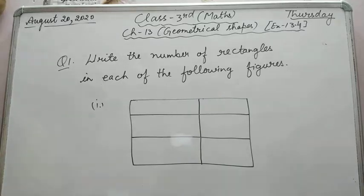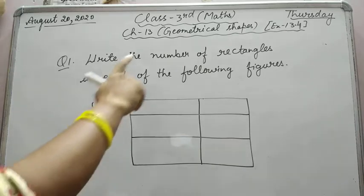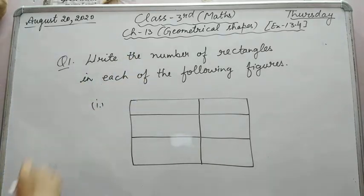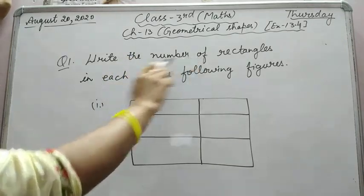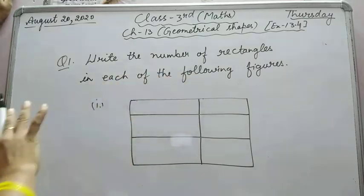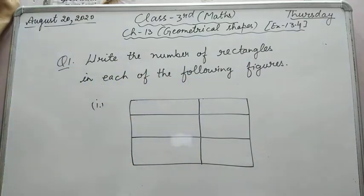Hello students, now Exercise 13.4 of chapter Geometrical Shapes. Question number one is: write the number of rectangles in each of the following figures. In this complete exercise, figures are given to you, so you have to observe the figure and tell your answer.